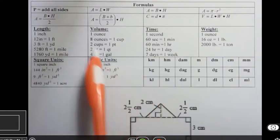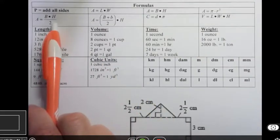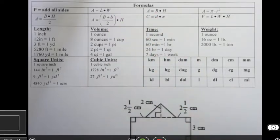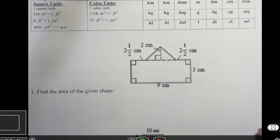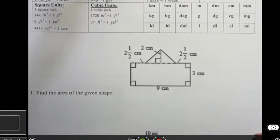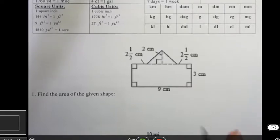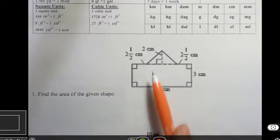I just have the formulas up there in case you're interested in looking at those. We're going to need the formula for a triangle, which is base times height divided by 2, and we're going to need the formula for a rectangle, which is length times width. So here's the shape that they ask you to find the area of. It's actually two shapes. You can see very distinctly there is a rectangle and then there's a triangle.